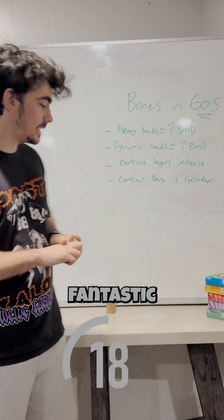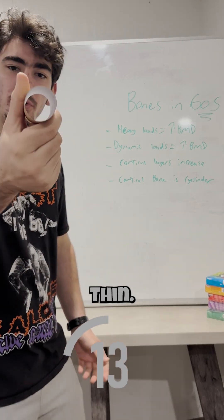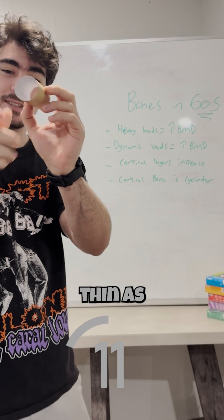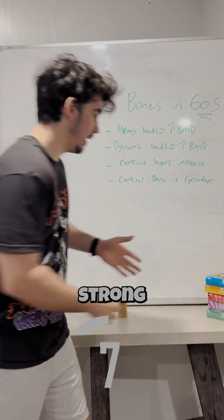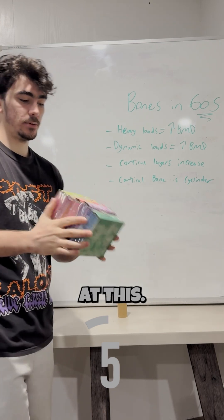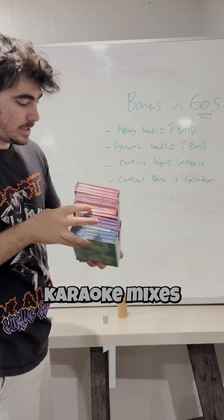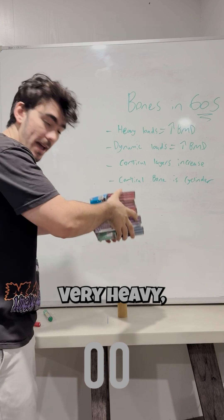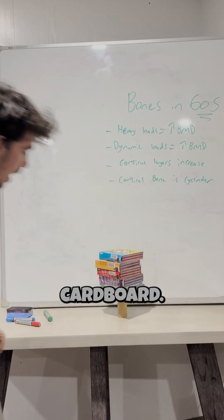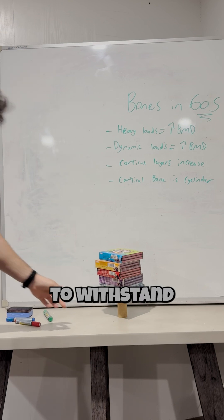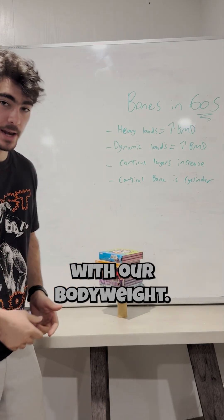That's fantastic because take the toilet paper roll — very small, thin, literally thin as a cardboard piece. Now, cylinders are naturally strong in nature. Look at this — we've got five full karaoke mixes full of CDs, very heavy, in regards to the cardboard. And look, it's able to withstand that load easily. And that's the same as our bones with our body weight.